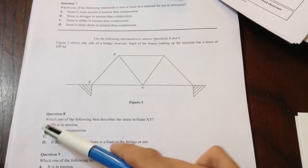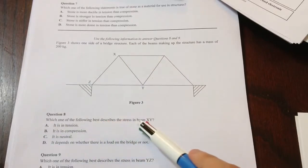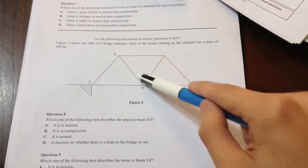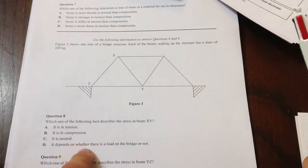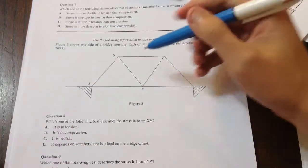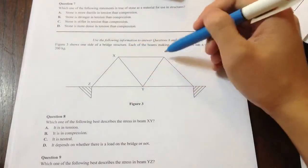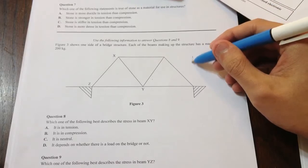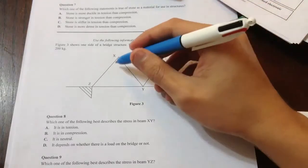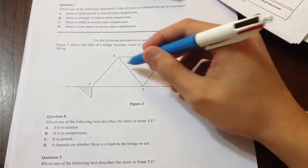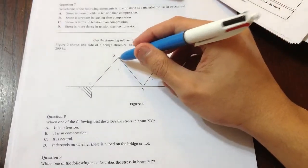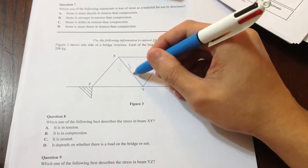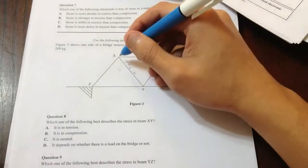So here's the structure. Which of the following best describes the stress in beam XY? Is it tension, compression, neutral or depending if there's a load on the bridge? The way I like to think of it is I kind of visualize just two of them in my head. And what's going to happen is there's going to be weight pulling them down. There's going to be weight pulling them down here. And these are supporting it up. So these things are holding up something so they're under compression.